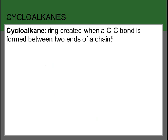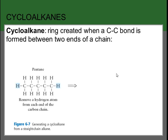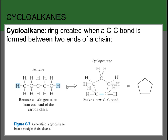Cycloalkanes are rings created when a carbon-carbon bond forms between two ends of a chain. For example, with pentane, if we remove an H from each end and connect those two carbons into a ring, we get cyclopentane with 10 hydrogens instead of the original 12.